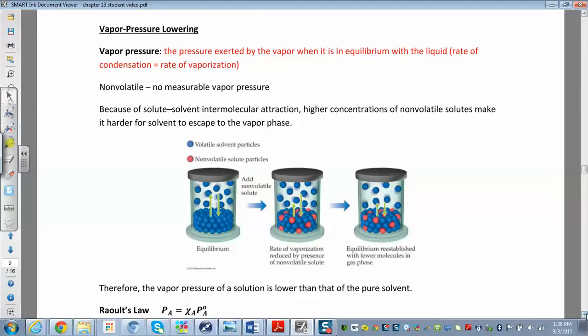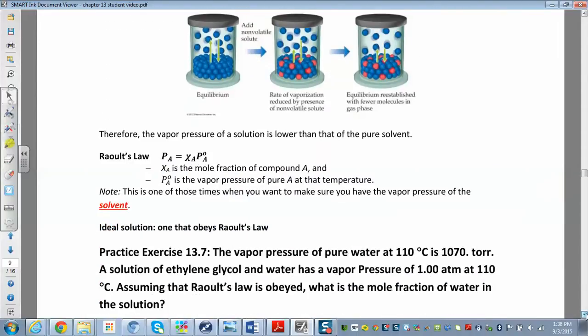And you can calculate this using Raoult's law, which just says the vapor pressure of the solution is equal to the mole fraction of the solvent times the vapor pressure of the pure solvent. Now make sure that you're using the mole fraction of the solvent, the bigger one, not the solute. It's really tempting to use the solute. That's not what we want. We want the solvent, the bigger one.